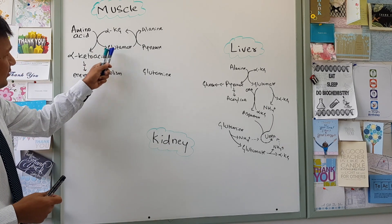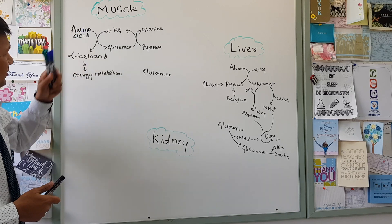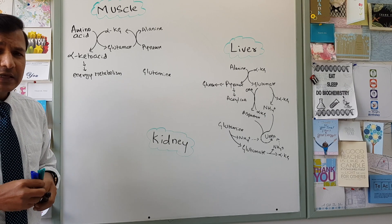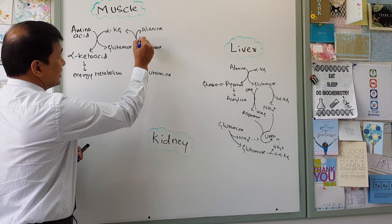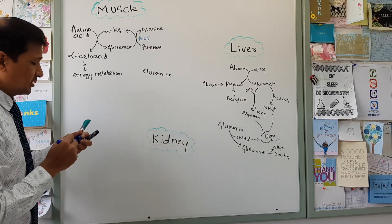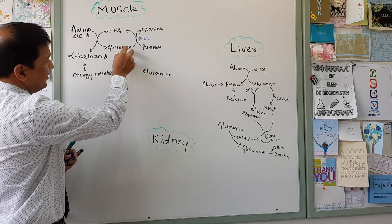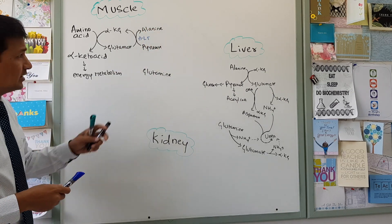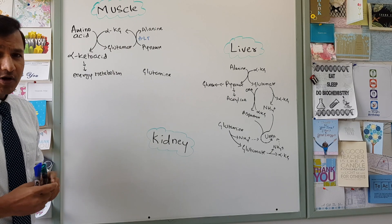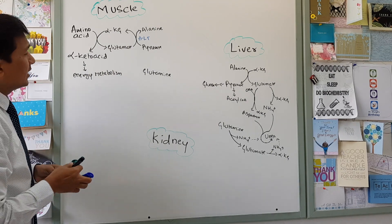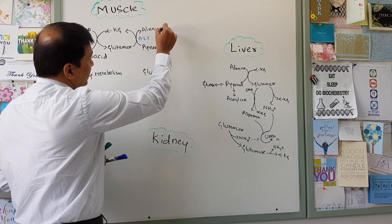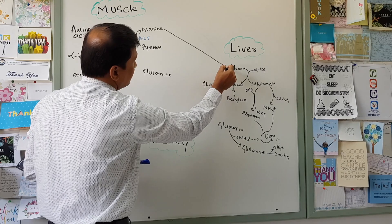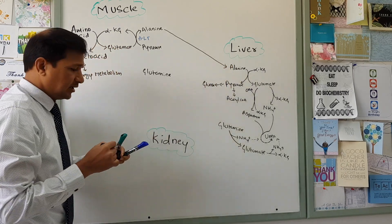The glutamate, which contains the amino group, will undergo one more transamination reaction conducted by ALT — alanine transaminase enzyme. It takes the amino group from glutamate and puts it onto pyruvate, converting pyruvate to alanine and glutamate back to alpha-ketoglutarate. Alanine is one of the predominant amino acids secreted by the skeletal muscle. It gets into the blood and is taken up by the liver.